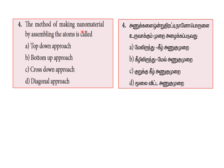Next question: the method of making nanomaterial by assembling the atoms is called? There are two approaches in nanomaterial making — the top-down approach and the bottom-up approach. The top-down approach involves breaking bulk material down.